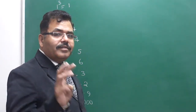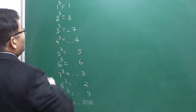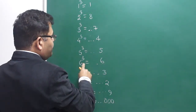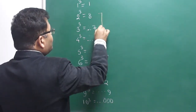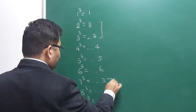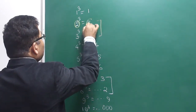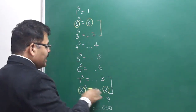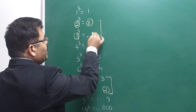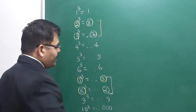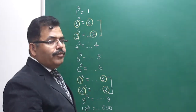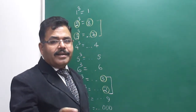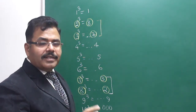Now you need to remember two things. First: what will happen at the unit place when you cube a number. 1 cubed is 1, 2 cubed gives 8, 3 cubed gives 7, 4 cubed gives 4, 5→5, 6→6, 7→3, 8→2. Here only two things you need to remember: 2 and 8 have inter-transformation — if you cube 2, unit place is 8, and if you cube 8, unit place is 2. Similarly, 3 and 7 are pairs — 3 cubed gives 7 at unit place, and 7 cubed gives 3. Rest of the numbers are the same at their unit position.